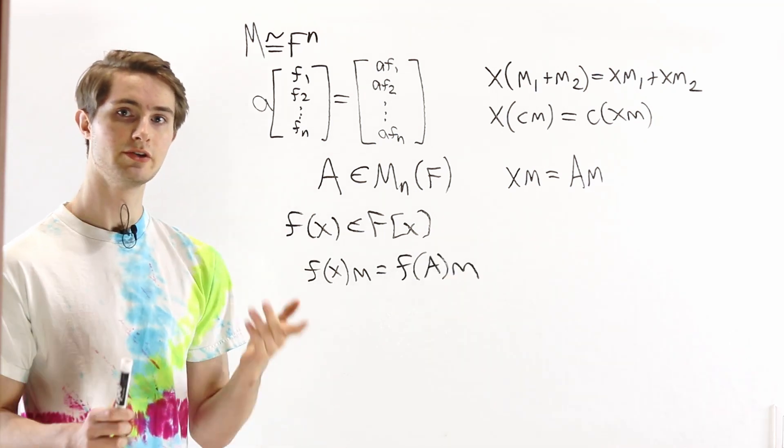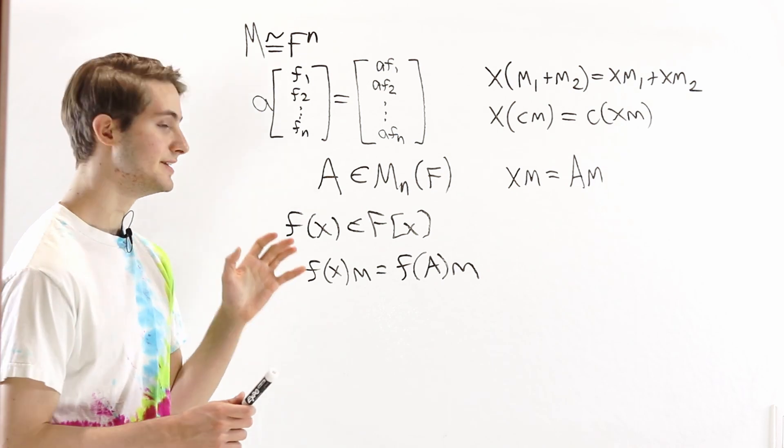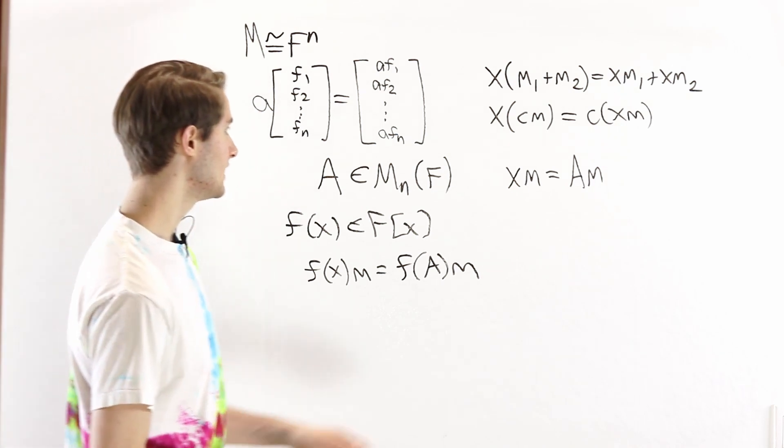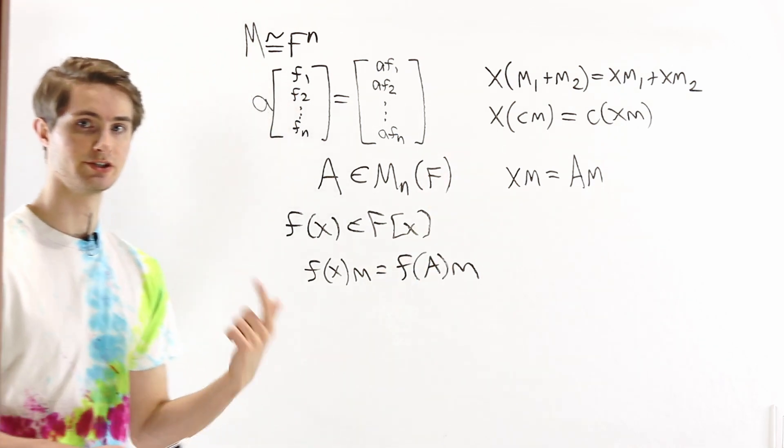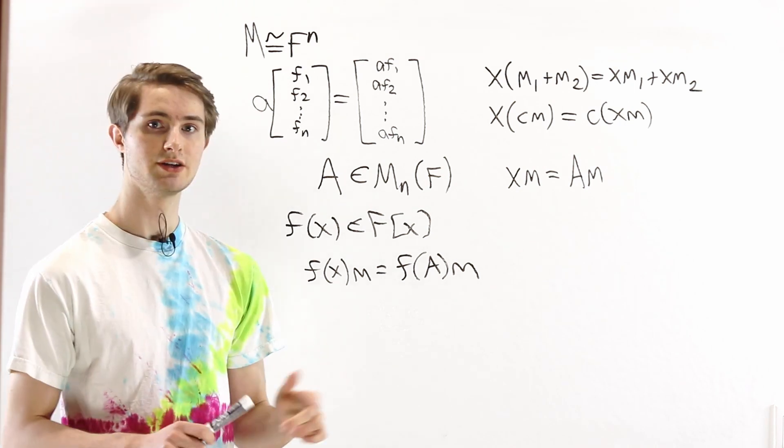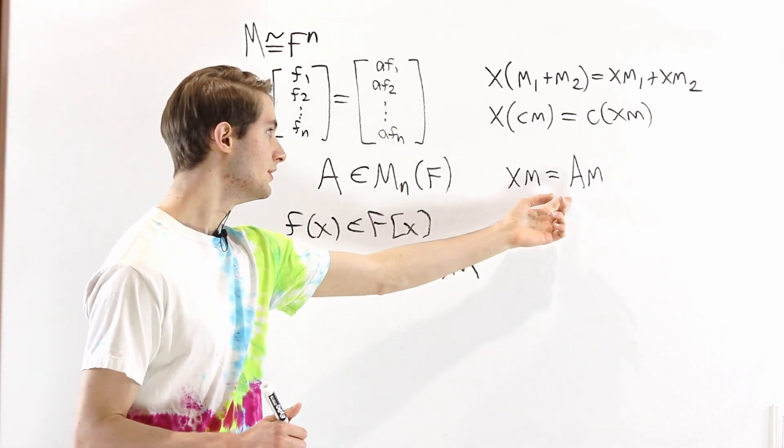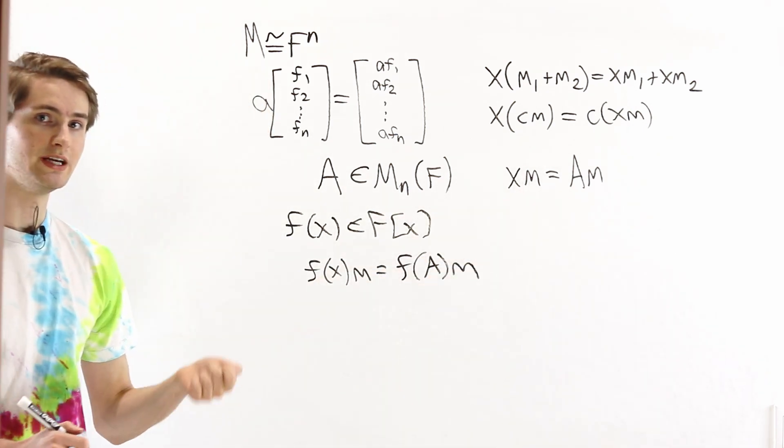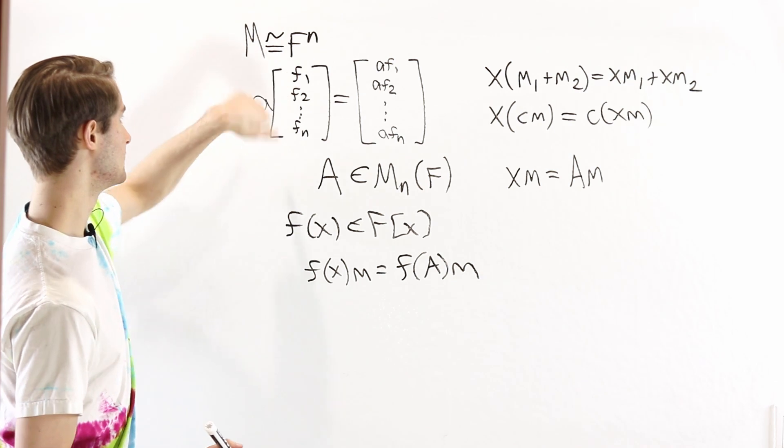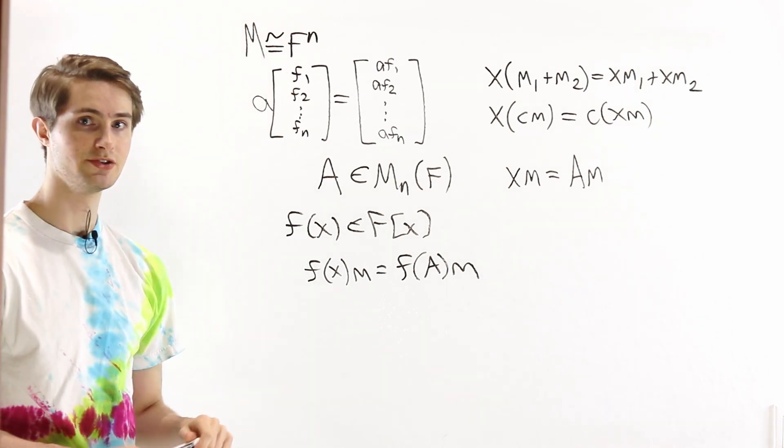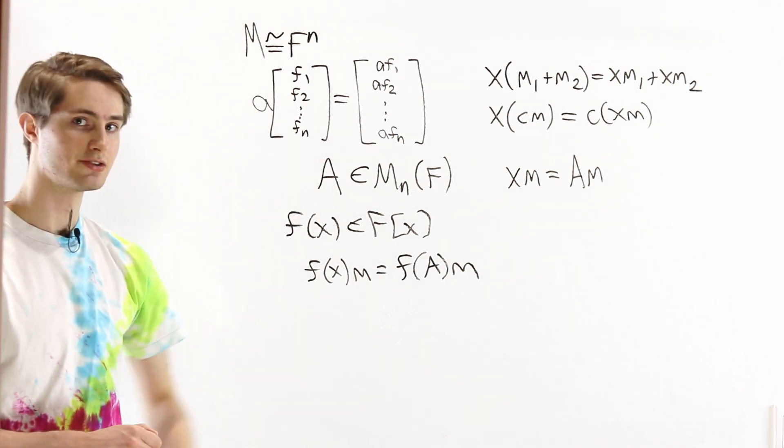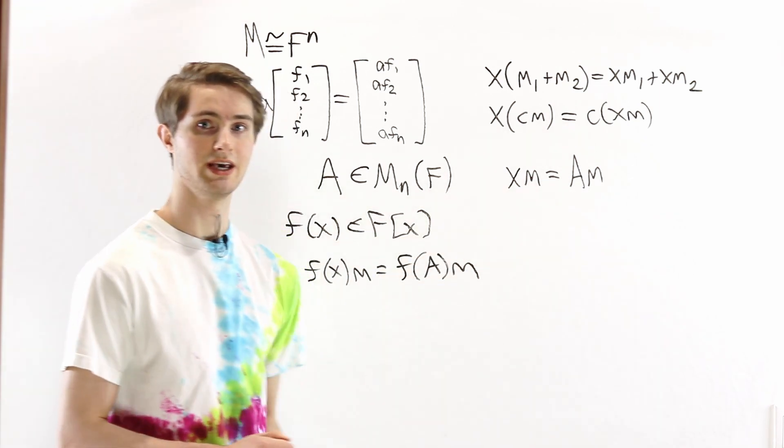Like we said earlier, under the module axioms, there aren't any additional restrictions besides that multiplication by x is a linear transformation. One of the consequences of that is if we take any matrix we want, any matrix A, we can always construct an FX module where the elements are n by n vectors, and then multiplication by x is described as multiplication by A.